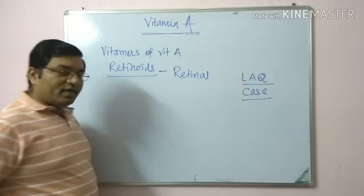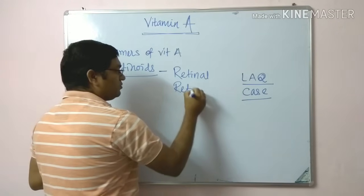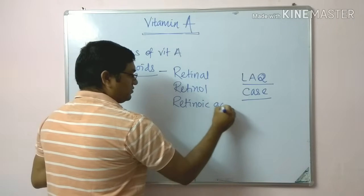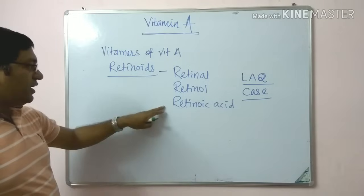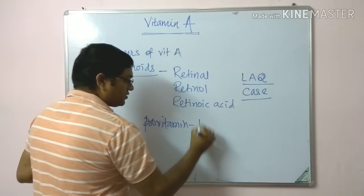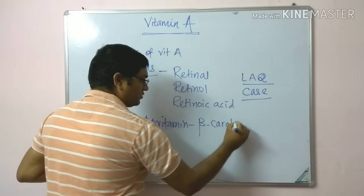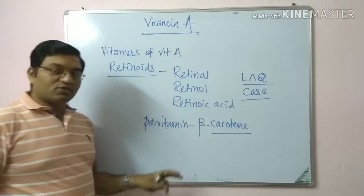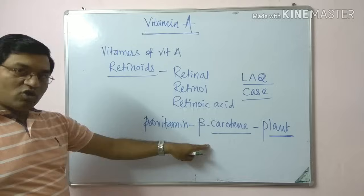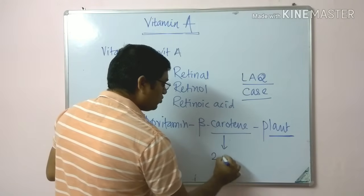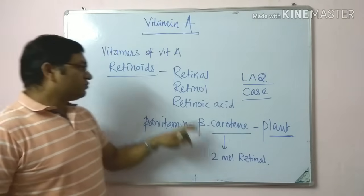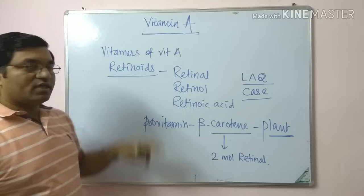The retinoids include retinal (vitamin A aldehyde), retinol (vitamin A alcohol), and retinoic acid. Along with these, the pro-vitamin beta-carotene is predominantly found in plant sources. Beta-carotene, by the action of dioxygenase, is converted into two molecules of retinol during digestion and absorption.